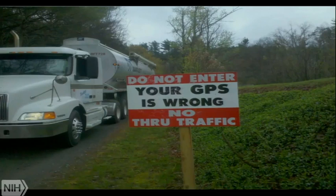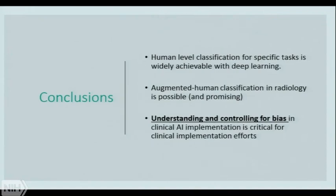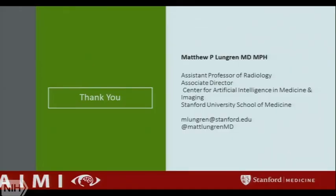As we begin to implement these systems, we really have to think about warnings — ways to inform users about the biases present in the model, where it could fail, and also our own biases, such as reminding us to consider all clinical information when the model says there's pneumonia. In conclusion: classification tasks are definitely doable, augmented human classification is going to be very exciting, but understanding and controlling for bias cannot be emphasized enough — particularly as we start moving models from one institution to another before we understand how well they'll work. Thank you.